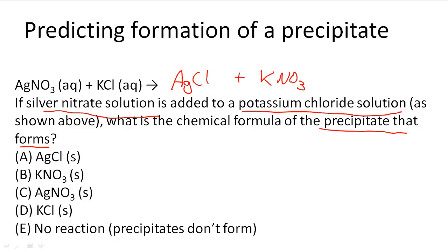Now that we know that AgCl and KNO3, we have to decide which one of these is going to be the precipitate if any of them are going to be the precipitate. So KNO3 matches up with our solubility rules and will most likely be in aqueous form, so it's soluble.